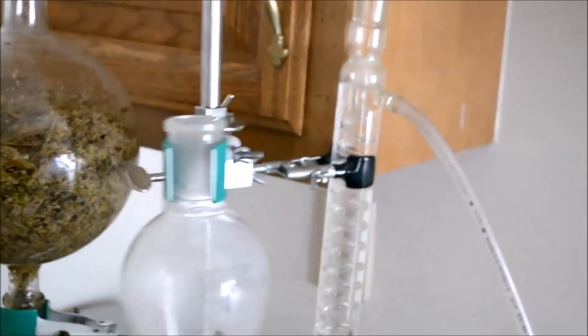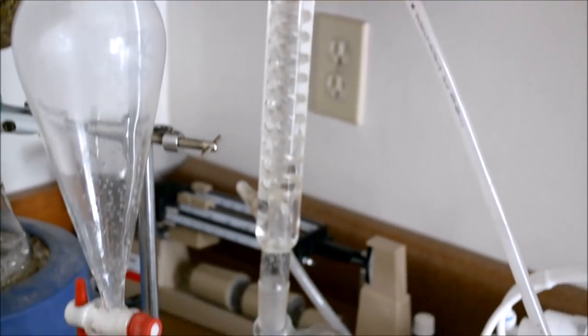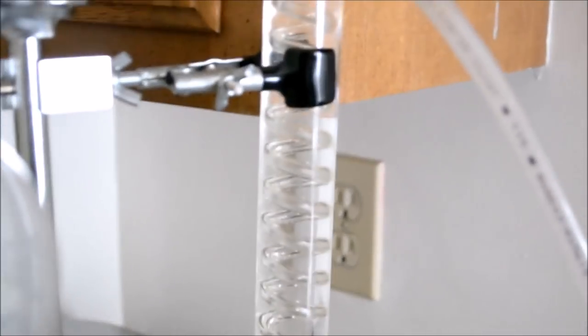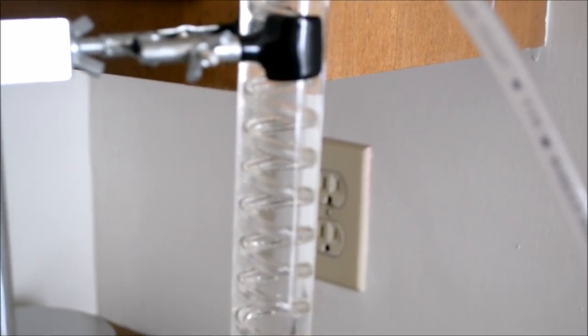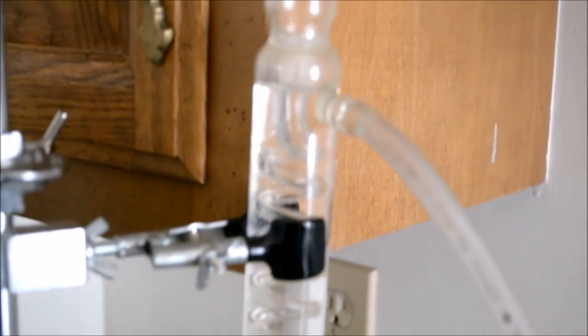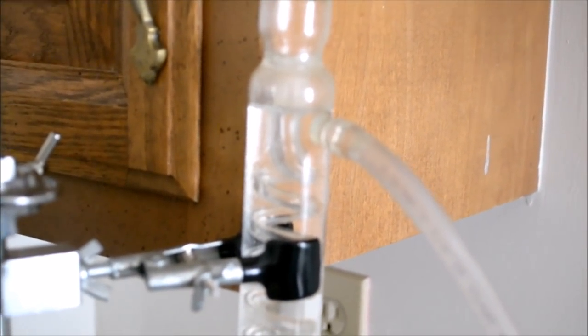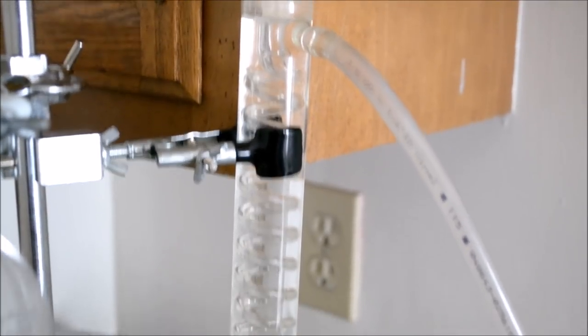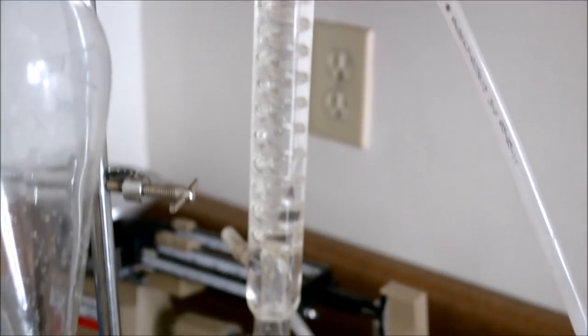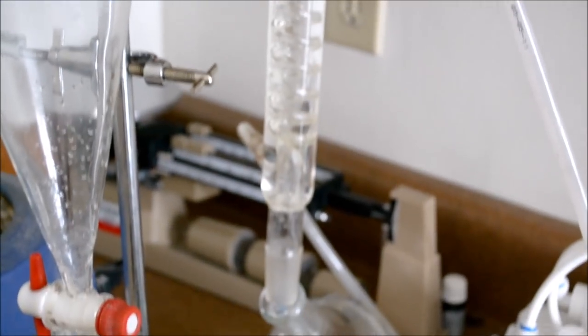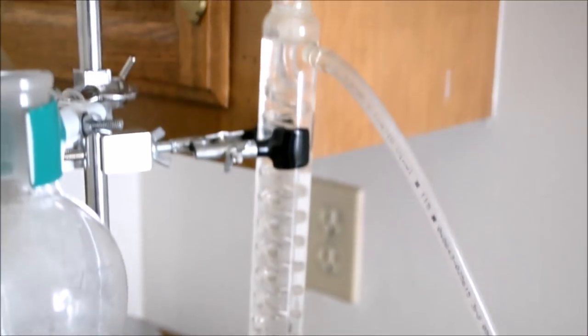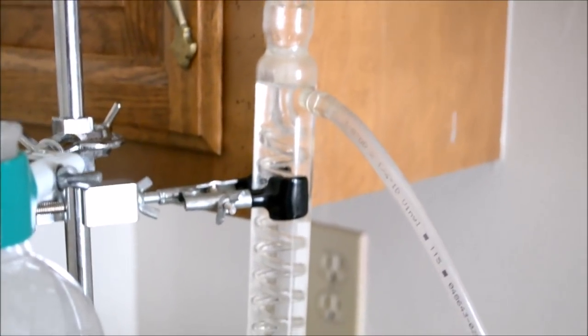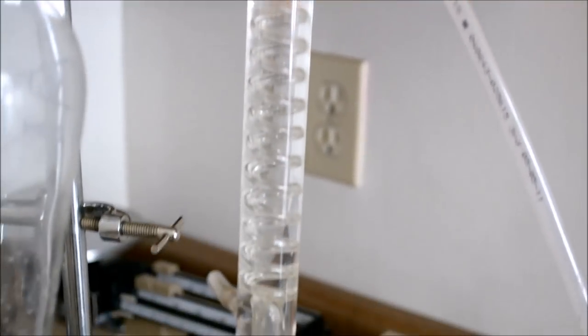The condenser is this long tube that you see here. It has coils inside of it, and the steam is pushed through those coils while I simultaneously push cold water around the outside of the coil. And this is what condenses the steam back into the liquid and allows me to collect it as an essential oil.